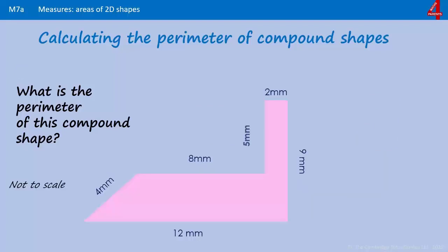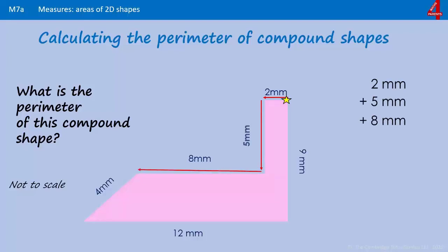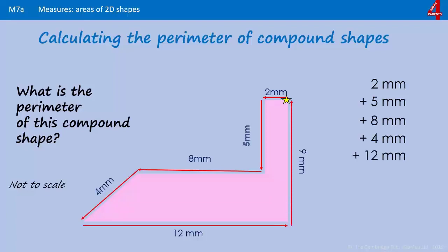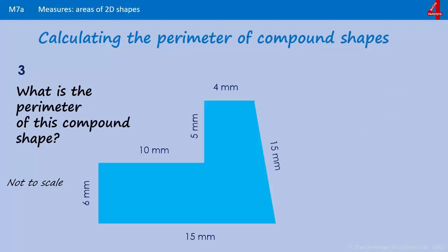Here we have a more complex shape. Starting here: that's two millimeters, five millimeters, add on eight millimeters, add on four millimeters, add on twelve millimeters, and add on nine millimeters. The perimeter of this shape is 40 millimeters.